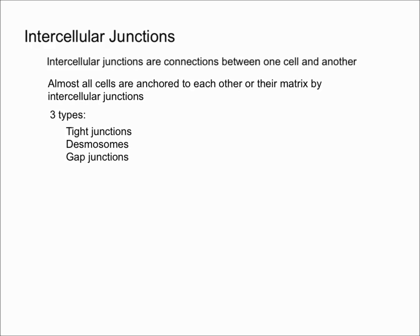We're going to talk about three different types of intercellular junctions: tight junctions, desmosomes, and gap junctions. Let's take a look at a picture so you can see it a little better.